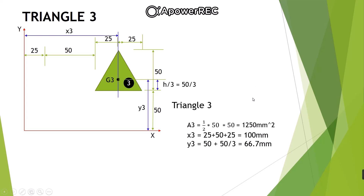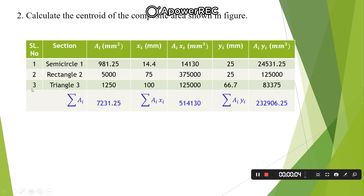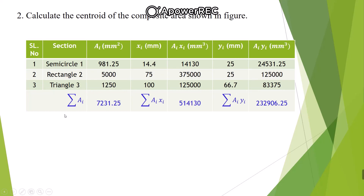For convenience, we use a tabular format with seven columns: serial number, simple figure, area, xi (distance of CG from Y-axis), ai·xi, yi (distance of CG from X-axis), and ai·yi. For the semicircle: area = 981.25 mm², xi = 14.4 mm, ai·xi = 14,130, yi = 25 mm, ai·yi = 24,531.25. Fill in the remaining rows for the rectangle and triangle similarly.